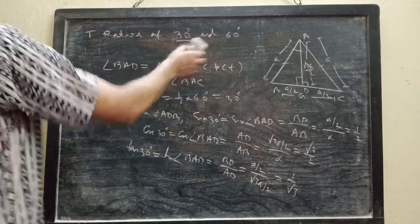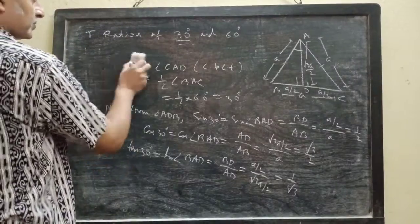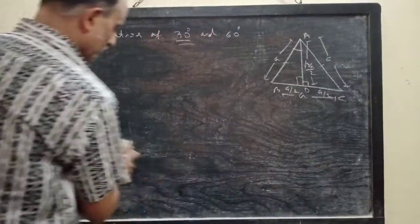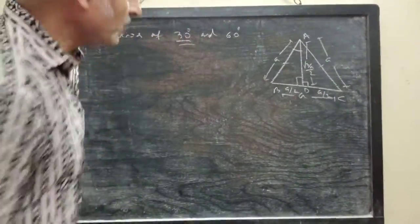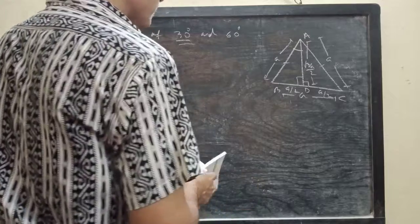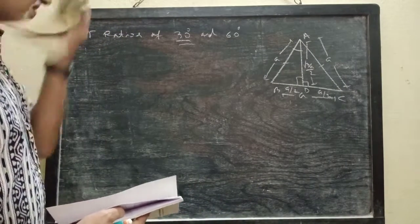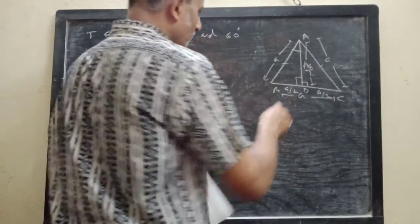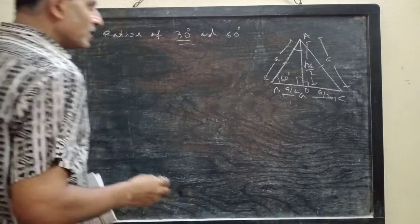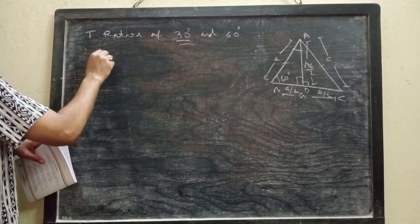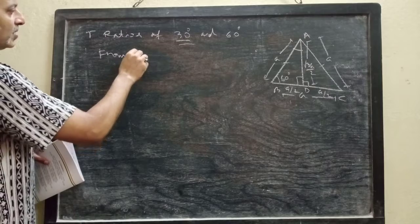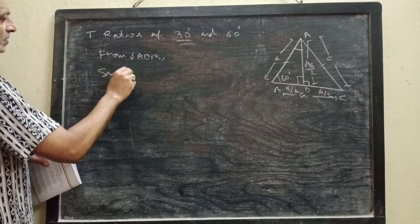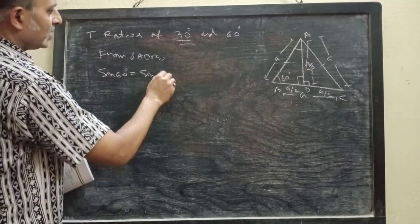Next, let us find trigonometric ratios of 60°. In triangle ABD, angle ABD is 60° because it is an angle of an equilateral triangle. Therefore, from triangle ABD, sin 60° means sin of angle ABD.